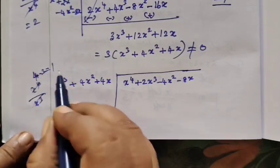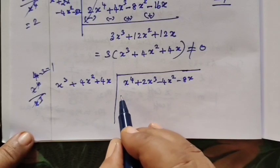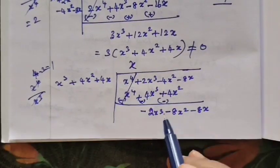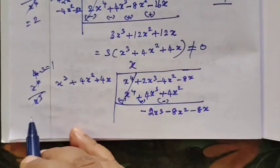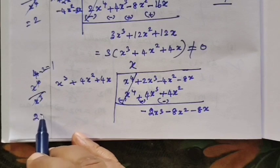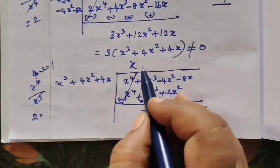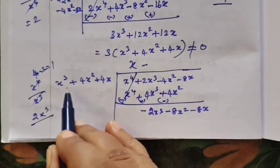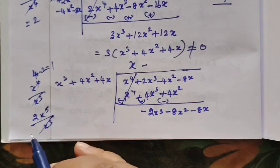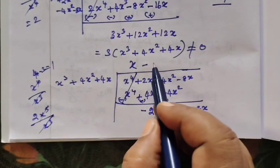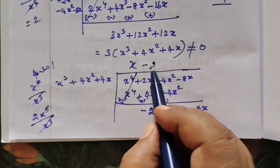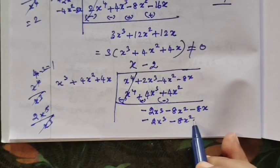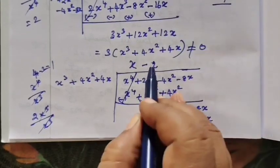Then the power is minus. So here we have x, and here we have 2x. This is minus. Here is 2x cube, and here is x cube. Now it will cancel. So you write x cube minus 8x squared minus 8x.